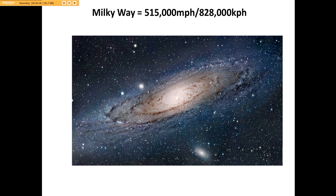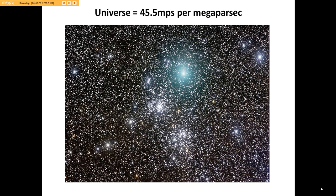It gets better. The Milky Way is traveling at 515,000 miles per hour. Let's continue now. Earth moving at 67,000 miles an hour, the sun moving at 450,000 miles an hour, and now we got the Milky Way moving at 550,000 miles an hour. You think it stops there? No, it does not. But the universe is expanding, moving at 45.5 miles per second per megaparsec.